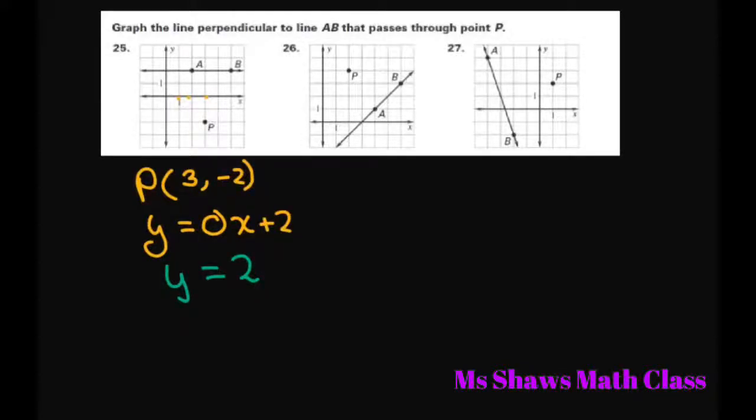Hey everyone, we're going to graph the line perpendicular to line AB that passes through point P. So in the first case, we have a horizontal line where the slope is 0. So the slope is 0, you basically have y equals 2 here.